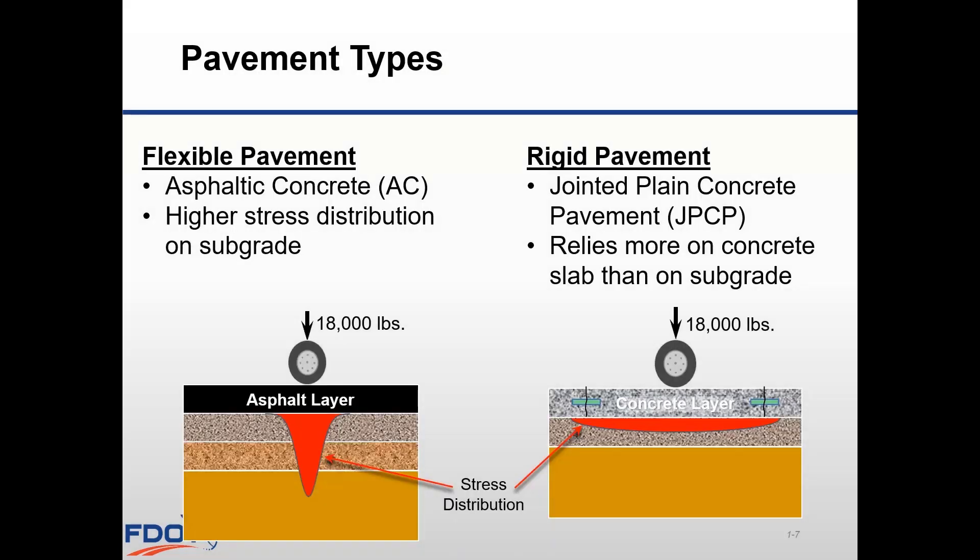Now let's look at pavement types. There are two types of pavement: flexible and rigid. Flexible pavement refers to Asphaltic Concrete Pavement, which we usually just call asphalt or AC. Rigid pavements are concrete pavements, usually referred to as just concrete pavement or sometimes JPCP, which stands for Jointed Plain Concrete Pavement.